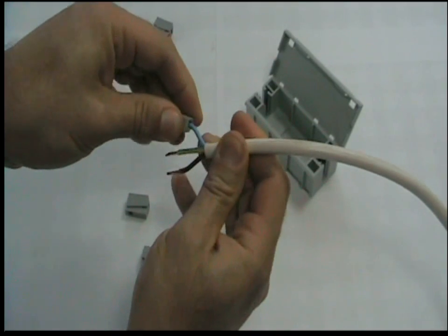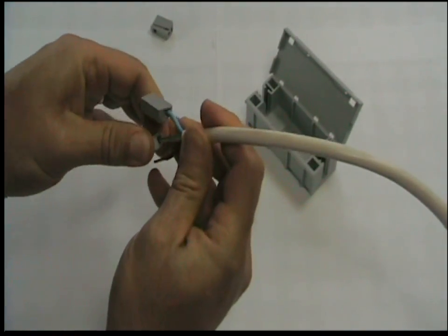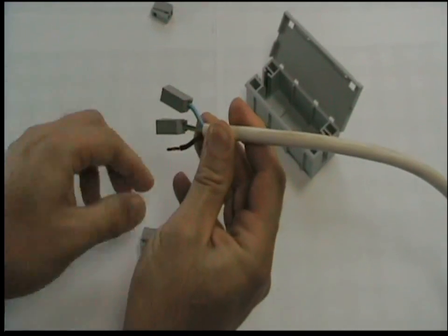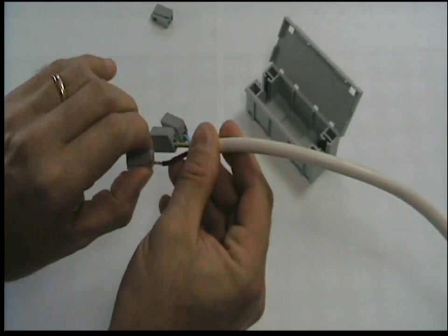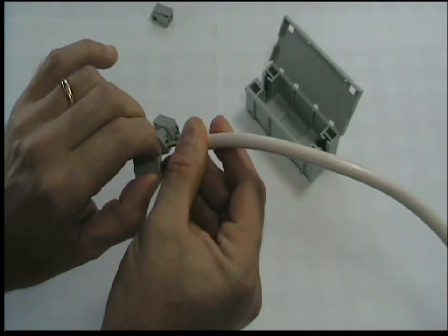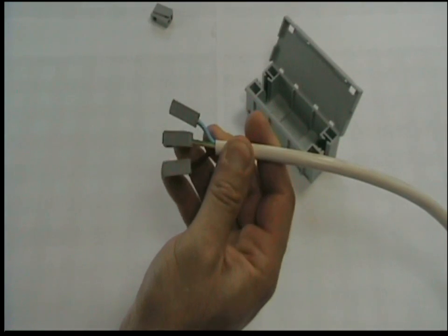First we fit the flex or solid core cable to the clamp side. Then we fit the solid core cable to the connectors.